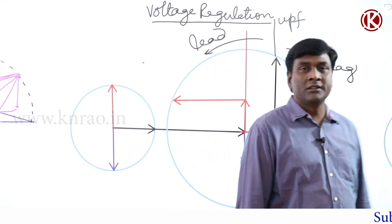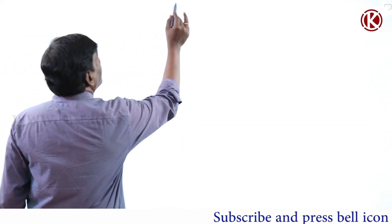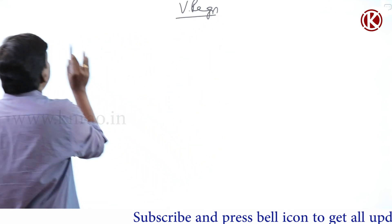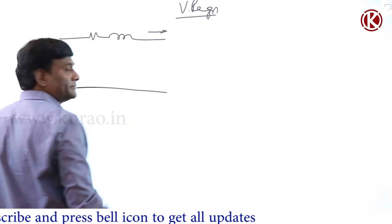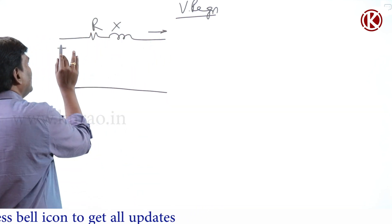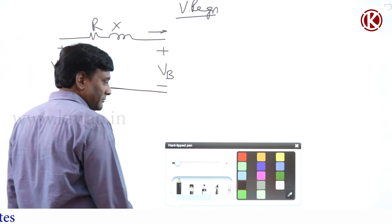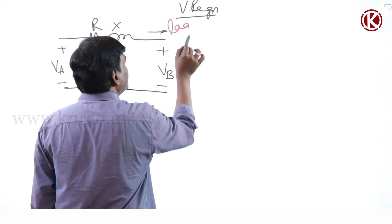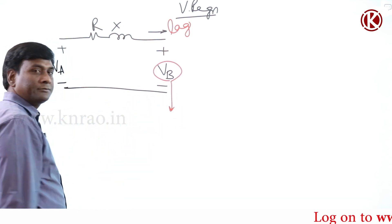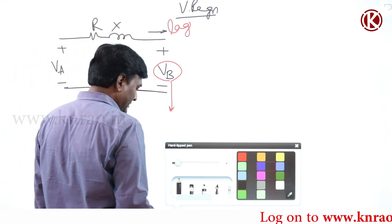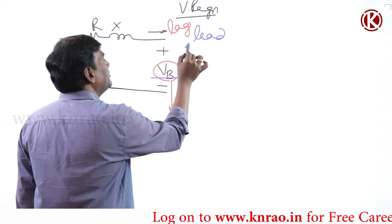Let us try to understand voltage regulation in order to draw external and internal characteristics. If we have resistance and reactance connected, with VA and VB as voltages: if it is operating at lagging power factor and I fix VA, then VB value will be less. If it is operating at leading power factor and I fix VA, then VB value will be more.